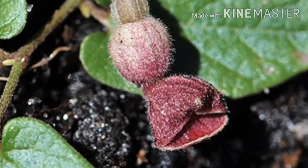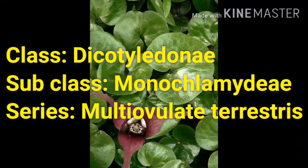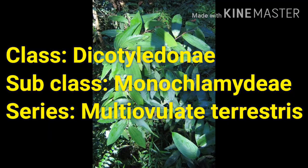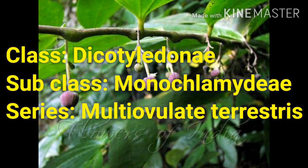The systematic position is class Dicotyledoneae, subclass Monochlamydeae. Characters of Dicotyledoneae are two cotyledons, reticulate venation of leaves, and also a taproot system.